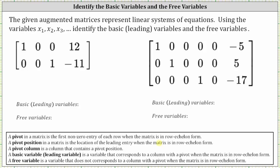Looking at the first augmented matrix, we have two pivots. We have a pivot in row one, column one, as well as row two, column three. And therefore the pivot columns are column one and column three.